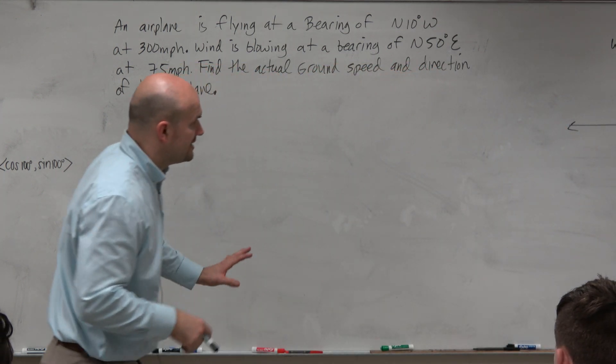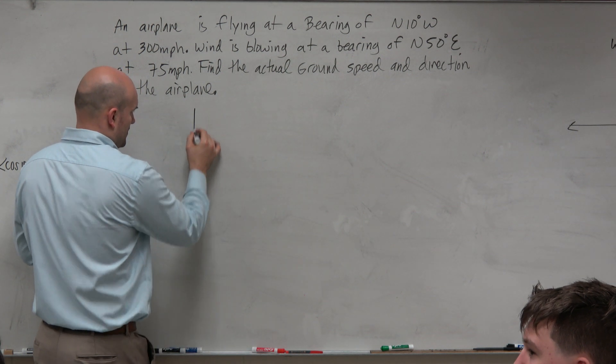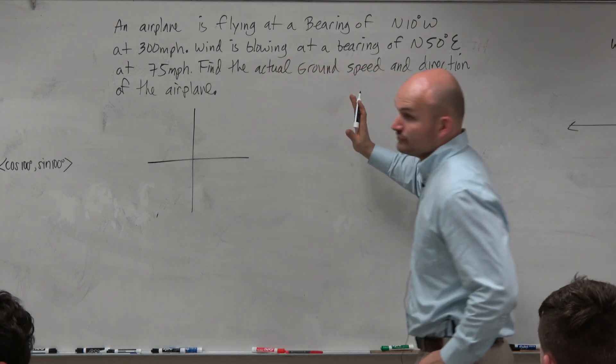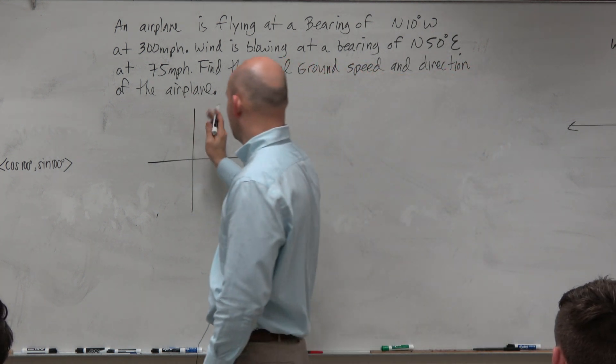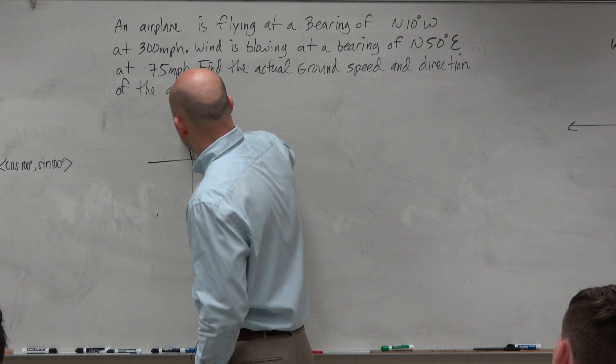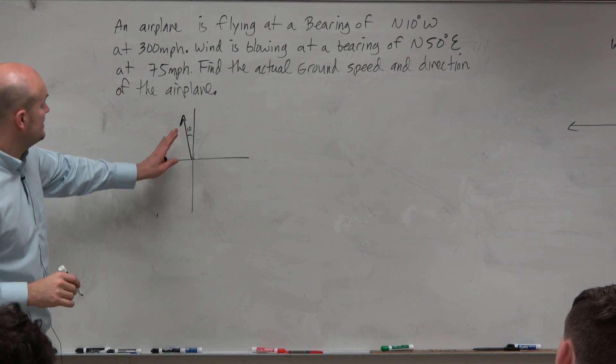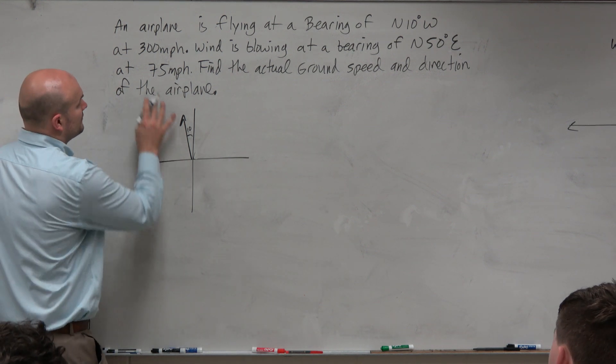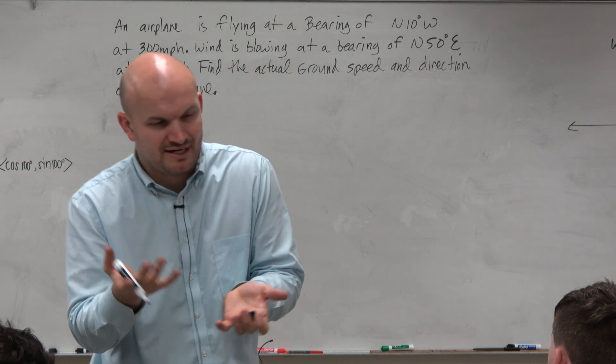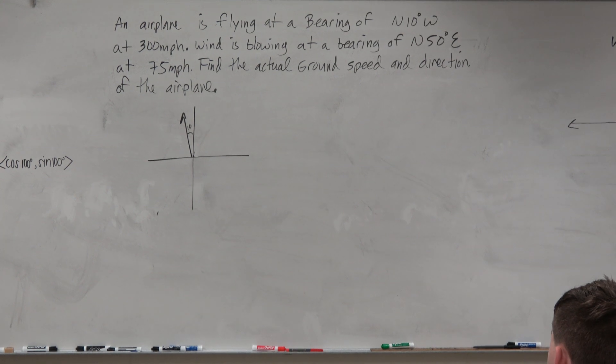So I'll get to what the question is asking here in a second. For right now, let's just go ahead and graph the information. So we have a vector going at a bearing of north 10 degrees west. So we're going north, 10 degrees west. So we know that's 10 degrees. And it has a magnitude of 300. That's going to be our magnitude since it's a rate. That's going to represent the magnitude of that vector.